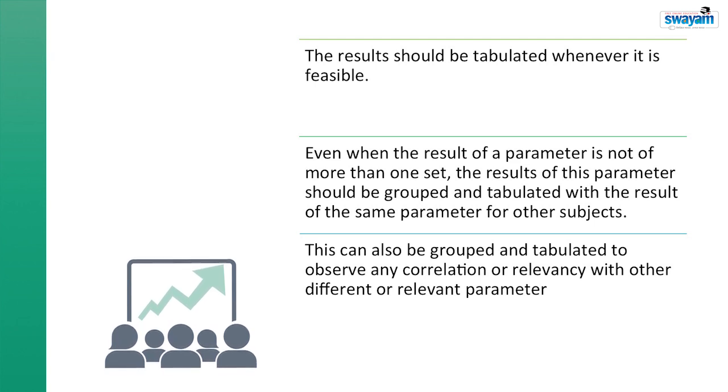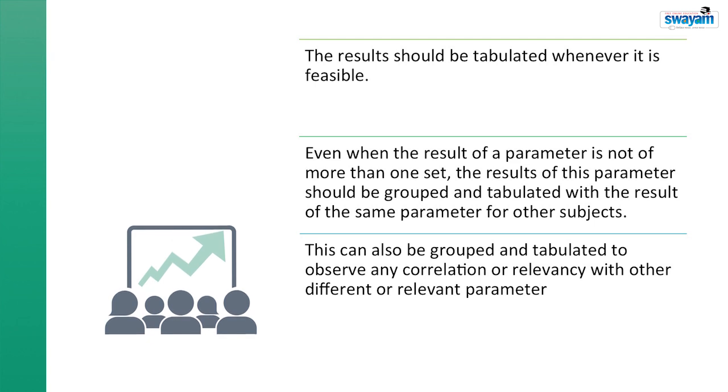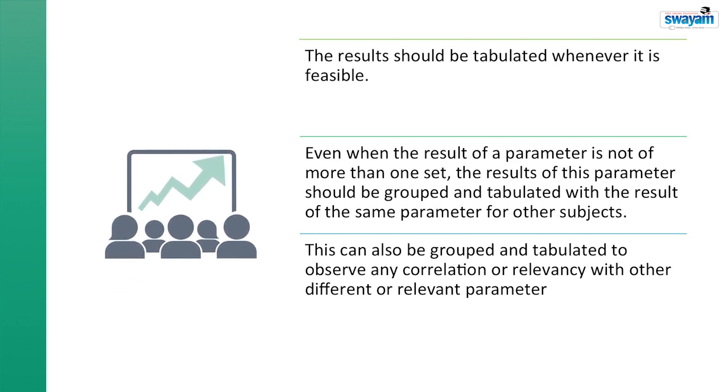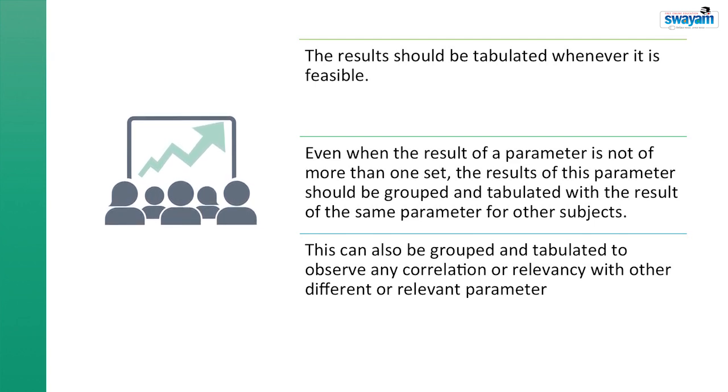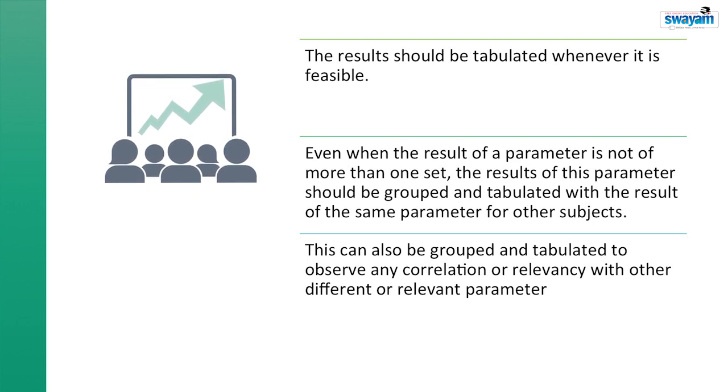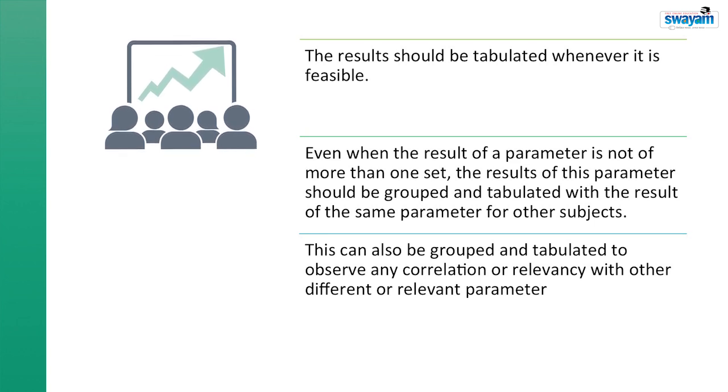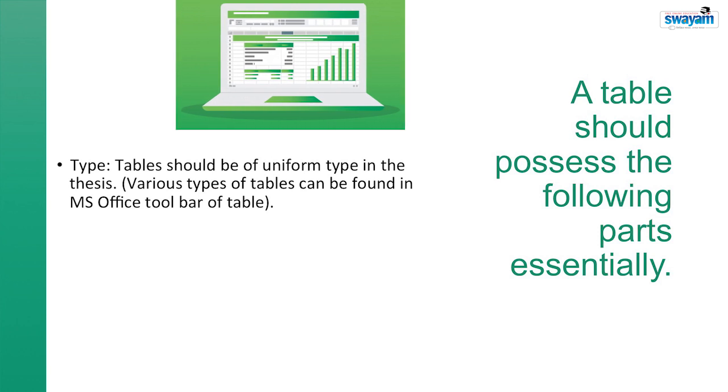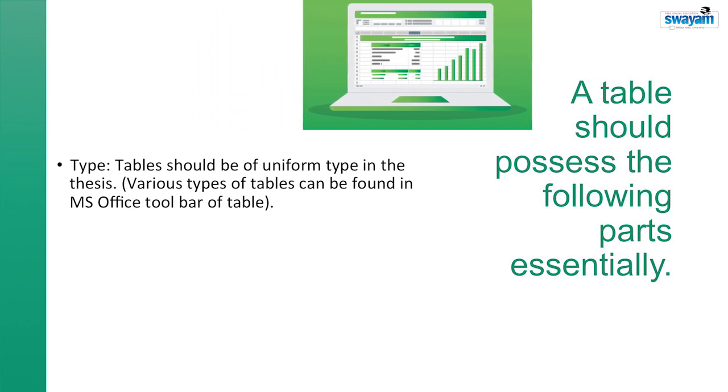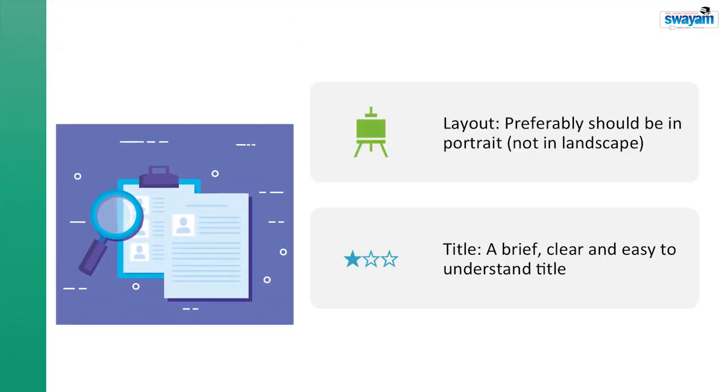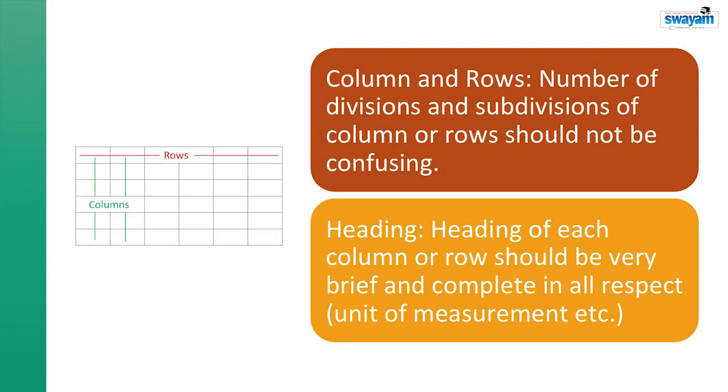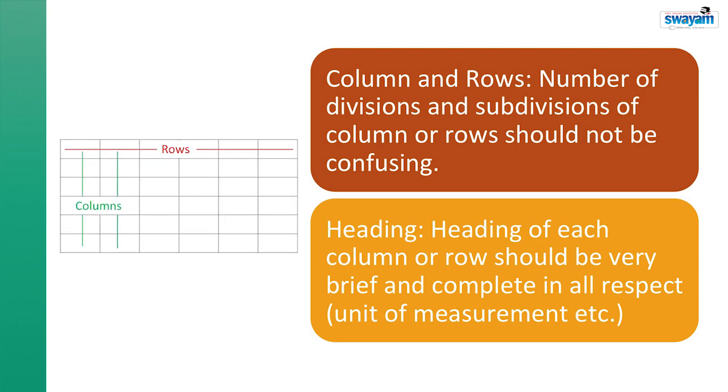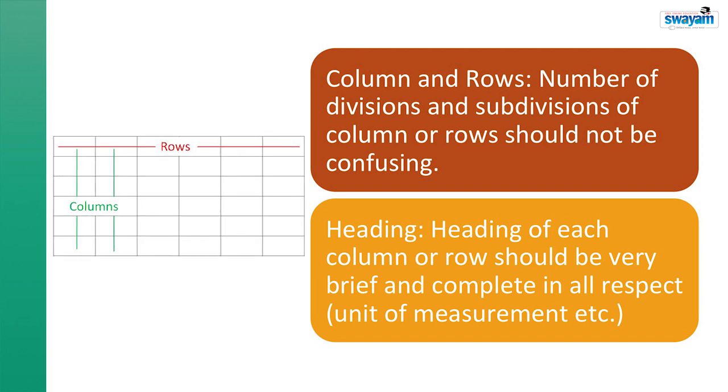Now let us focus to the infographics. What are the infographics? Tables, bar diagrams, diagrams all are coming under the infographics. The results should be tabulated whenever it is feasible. Even when the result of a parameter is not of more than one set, the result of this parameter should be grouped and tabulated with the result of the same parameter for other subjects. This may also be grouped and tabulated to observe any correlation or relevancy with other different or relevant parameter. A table should possess the following parts essentially: what is type, table should be of uniform type in thesis layout, preferably should be in the portrait, one title, a brief clear and easy to understand title, column name, rows, number of divisions and subdivisions, column or rows should not be confusing. Heading of each column or row should be very brief and complete in all respects.